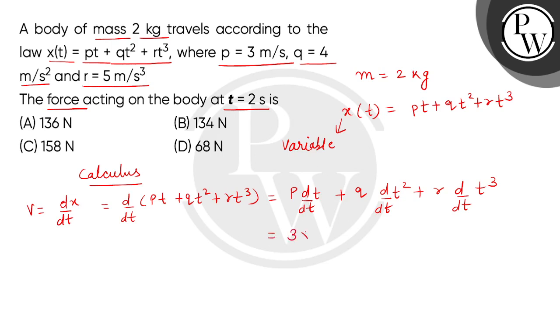P's value is 3 multiplied by 1. Q's value is 4, then multiplied by 2t, plus R's value is 5 multiplied by 3t². So we can find velocity is 3 + 8t + 15t².